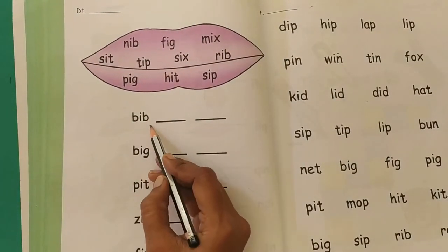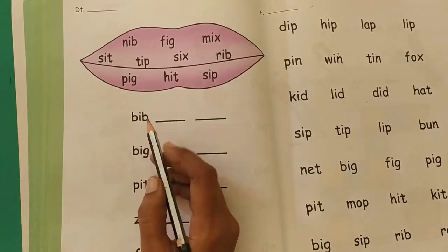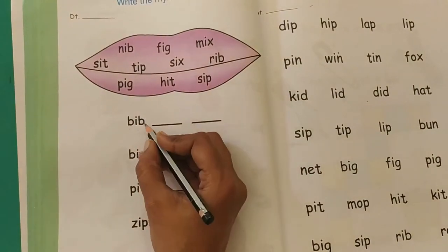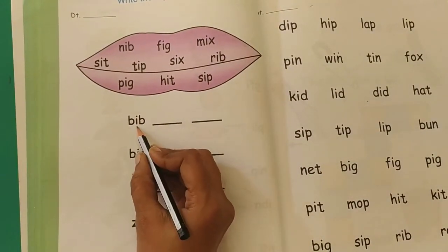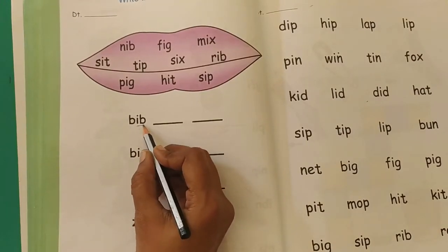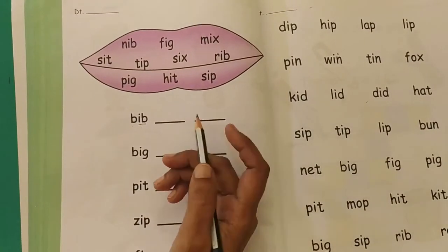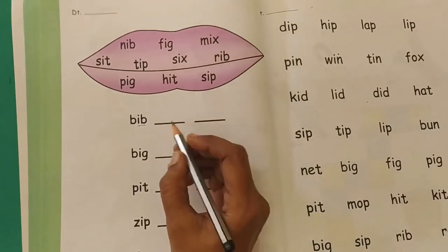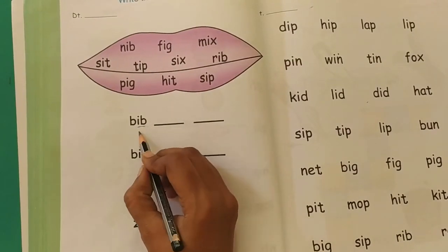So first word, they have also given you some words over here. The first word is BIB. Now you have to find the rhyming word of BIB. Now how do we find rhyming words? The ending sounds of the words, the last two or three words, they have to, in this case the last two words have to be the same. So the ending sound will be the same. So this is BIB. What will rhyme with BIB? Any word which has I-B in the end, that will rhyme with BIB.